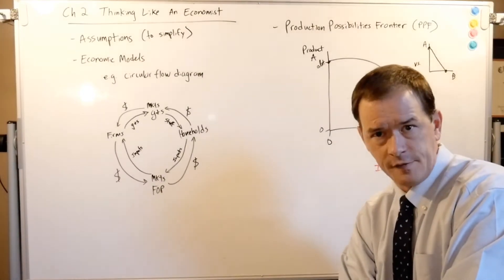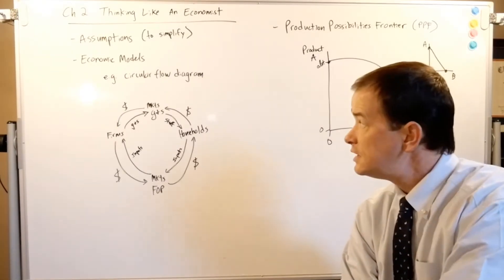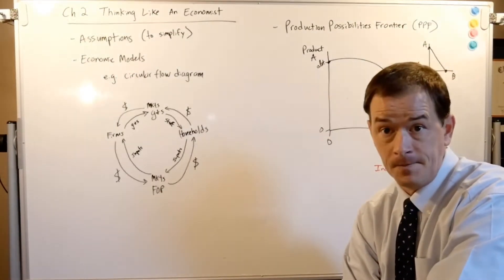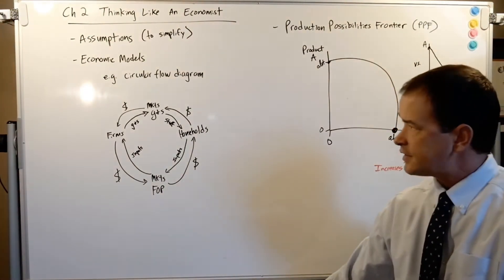So how do we do this? We'll make a lot of assumptions to simplify and then we derive what's called economic models. Now our first economic model that we're going to look at is the circular flow diagram, all right, which I've crudely drawn here.